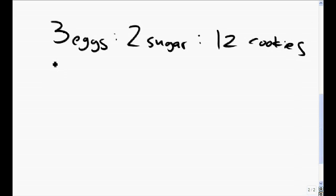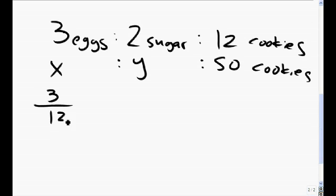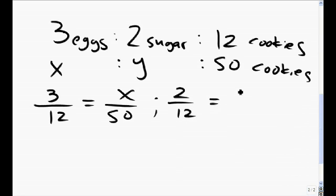Grandma's cookie recipe calls for 3 eggs to 2 tablespoons of sugar, which generates 12 cookies. If we let X represent the unknown quantity of eggs, Y represent the unknown quantity of sugar, for 50 cookies, we can create a proportion that relates the 3 eggs to 12 cookies equal to X eggs to 50 cookies. A second proportion relating the 2 tablespoons of sugar to 12 cookies, equal to the Y tablespoons of sugar to 50 cookies.